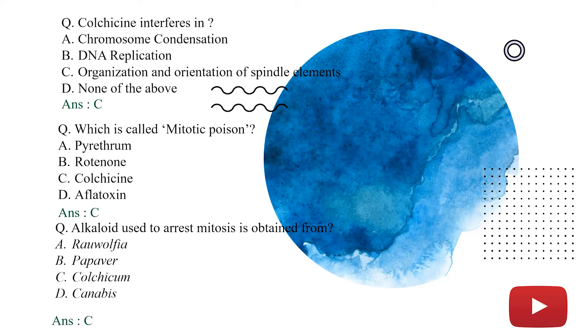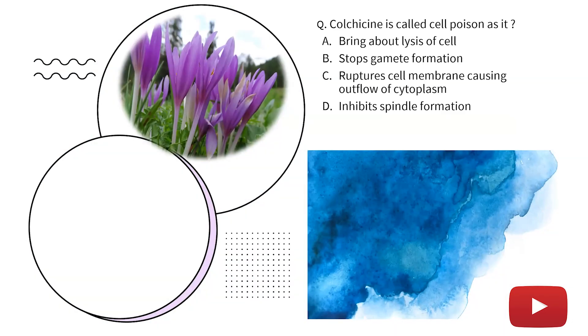Now, we are talking about next question which is colchicine is called cell poison as it. Option A, bring about lysis of cell. Option B, stops gamete formation. Option C, ruptures cell membrane causing outflow of cytoplasm. Option D, inhibits spindle formation. Humne previously just check kiya tha ki colchicine spindle formation ko stop kerta hai. It inhibits spindle formation. Answer is D.